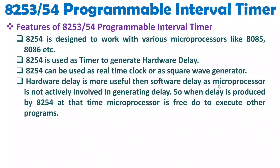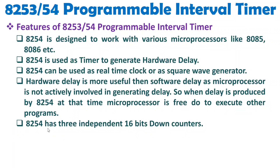The microprocessor is free to do any other access of program. When delay is produced by 8254, the microprocessor is free to execute other programs. That is the basic advantage of 8254 interfacing with initial versions of microprocessors like 8085 and 8086. The 8254 has three independent 16-bit down counters. In a down counter, the initial value is maximum and decrements with respect to time until it reaches 0.